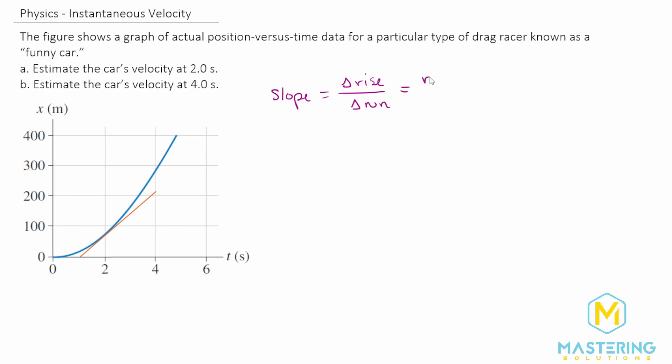Obviously, delta anything is final minus initial, so we have rise final minus rise initial over run final minus run initial.